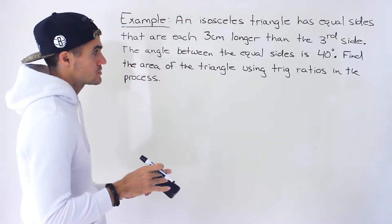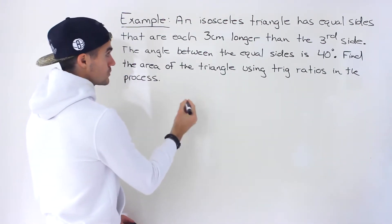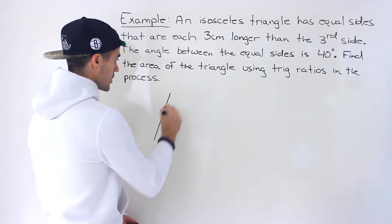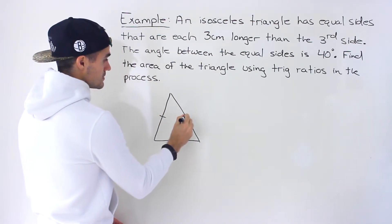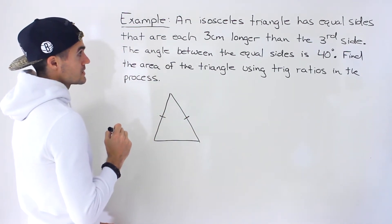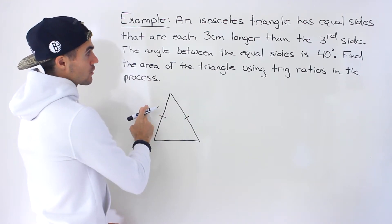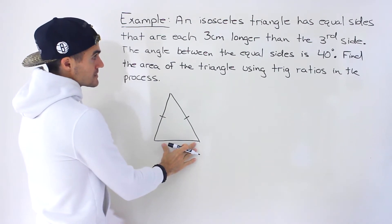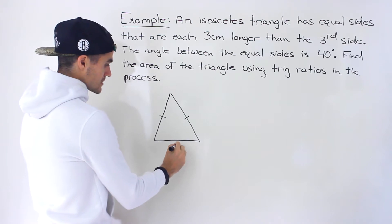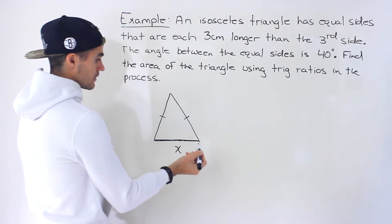As usual, let's take this scenario and put it in a diagram so we can see visually what's happening. We have an isosceles triangle. The two equal sides are on either side, and we're told that each of these sides is three centimeters longer than the third side. I'm going to introduce a variable x to represent the length of that third side.